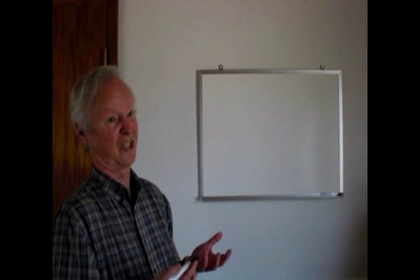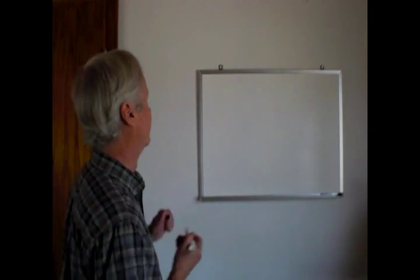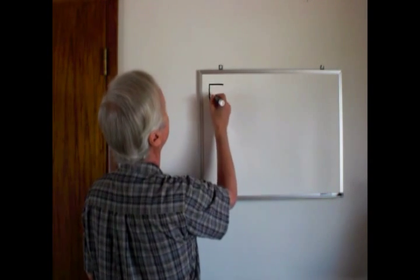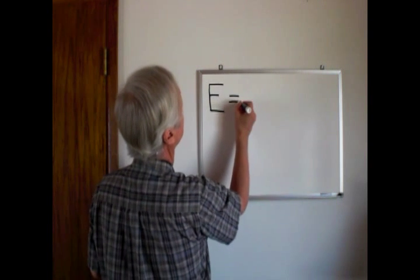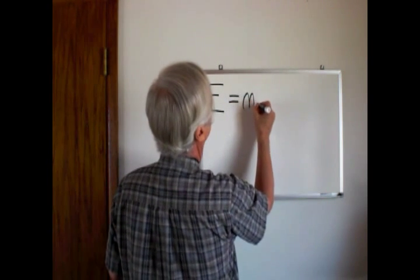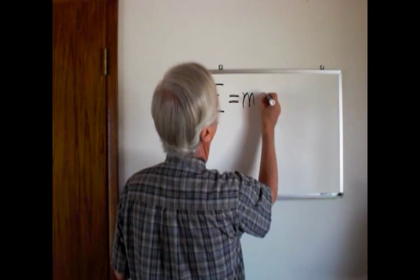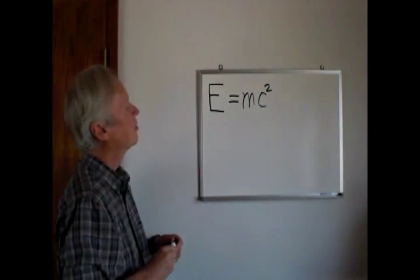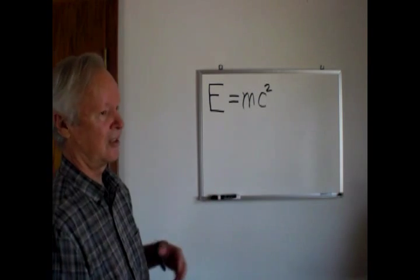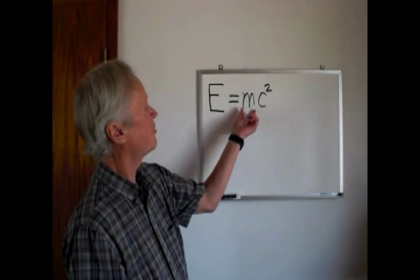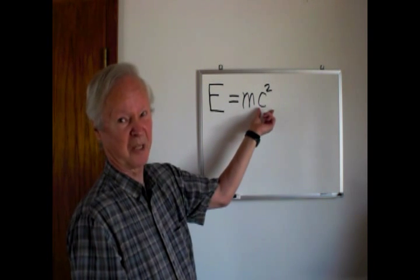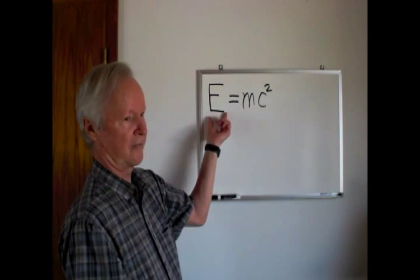E is energy equals mass times speed of light squared. What this equation is really telling us is that we can have a small amount of mass and multiply it by a very large number, the speed of light squared, and we get a lot of energy.